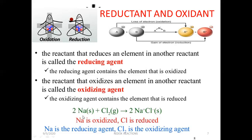Let us see this through an example. Sodium plus chlorine gas gives us sodium chloride. Here, sodium is electropositive and chlorine is electronegative. Because chlorine, which is electronegative, is being added to Na, this process is oxidation. While the electropositive element is being added to chlorine, so this is reduction. Here, Na is acting as the reducing agent and Cl2 is acting as the oxidizing agent. Na is getting oxidized and Cl2 is getting reduced.